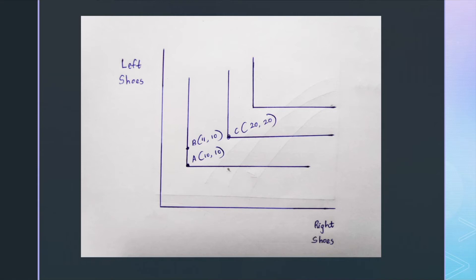The figure shows the indifference curves for perfect complements. The consumer always wants to consume the goods in fixed proportions. The indifference curves are L-shaped with the vertex of the L occurring at the points where the number of left shoes equals the number of right shoes. Here A and C occur at the vertex. In the extreme left IC at point A, the vertex represents the consumption bundle 10-10, meaning 10 left shoes and 10 right shoes. If we increase the number of right and left shoes together and in the same proportion, the IC shifts to the right to a new vertex point C, which provides greater satisfaction. The important thing about perfect complements is that the consumer prefers to consume the goods in fixed proportions.